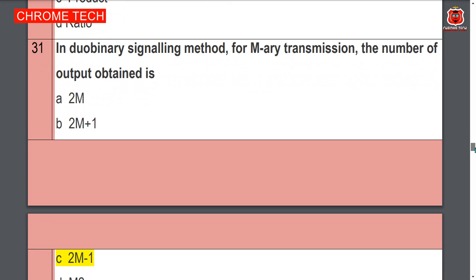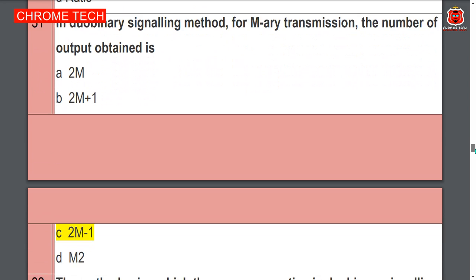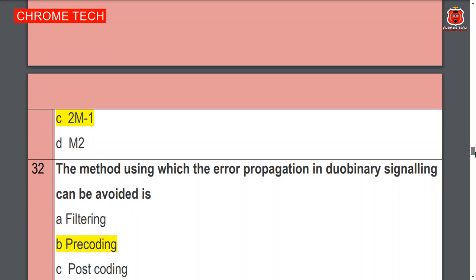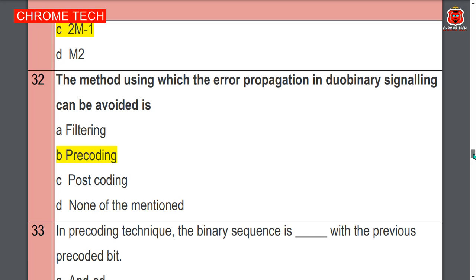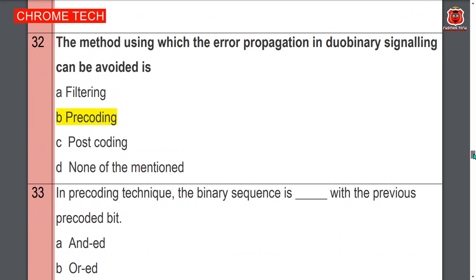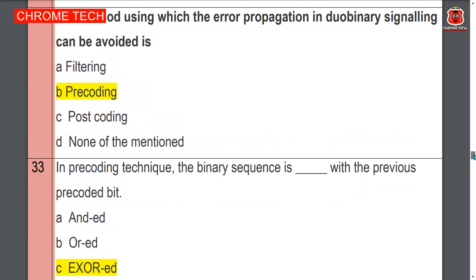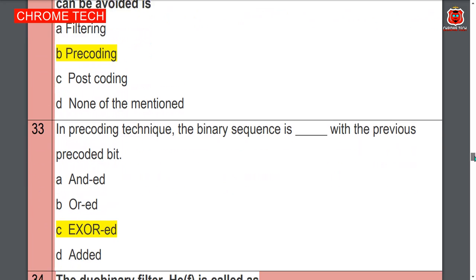In the duobinary signaling method for transmission the number of output levels obtained is 2M−1 — option C is the correct answer. The method using which error propagation in duobinary signaling can be avoided is — precoding, option B is the correct answer.